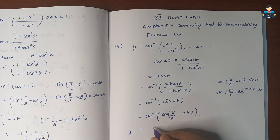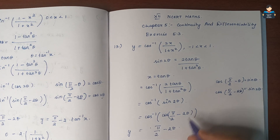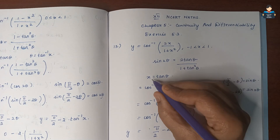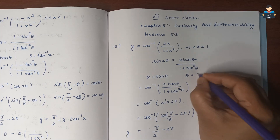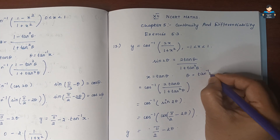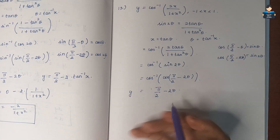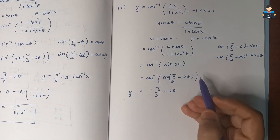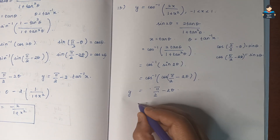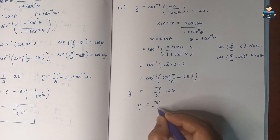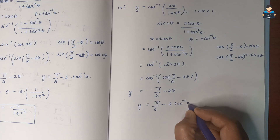So y equals π/2 minus 2θ. Recalling that x equals tan θ, theta will be equal to tan inverse of x. Substituting in place of θ, we get y equals π/2 minus 2 tan inverse of x.